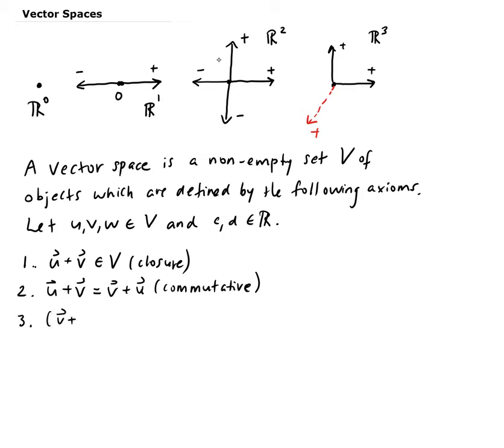Third is the associative property. You have (u + v) + w. That's the same thing as taking u + (v + w). It doesn't matter which two you add first, u and v, or v and w. You're going to get the same result. This is the associative property.